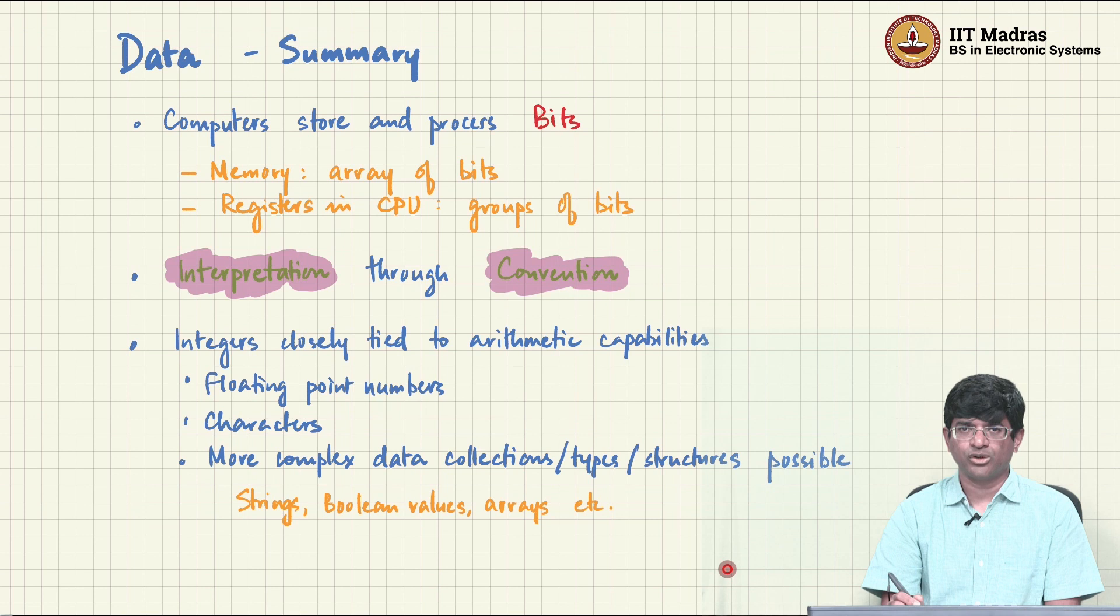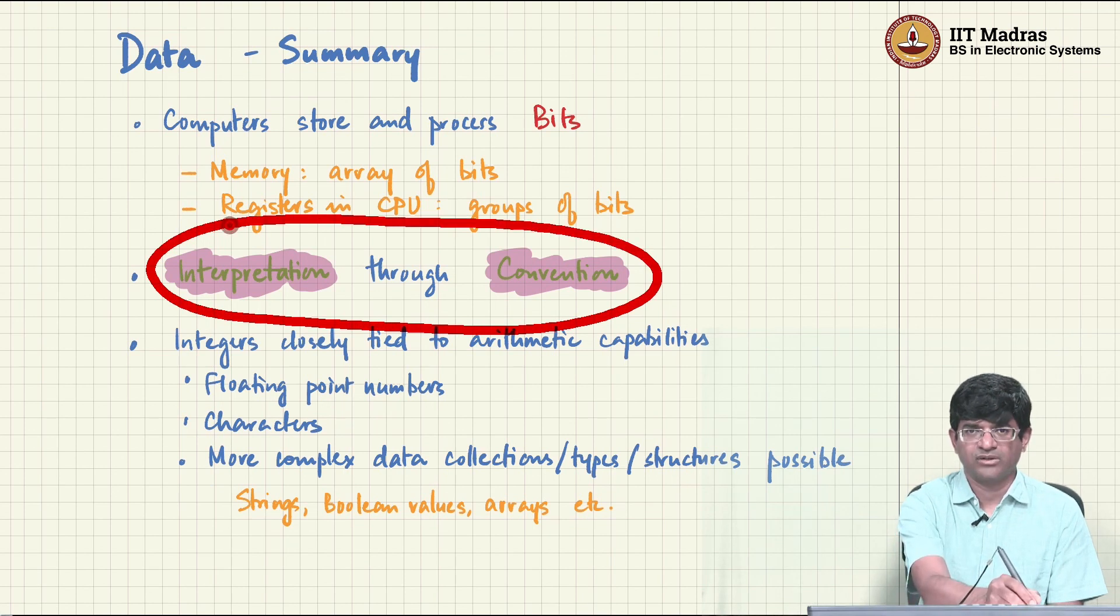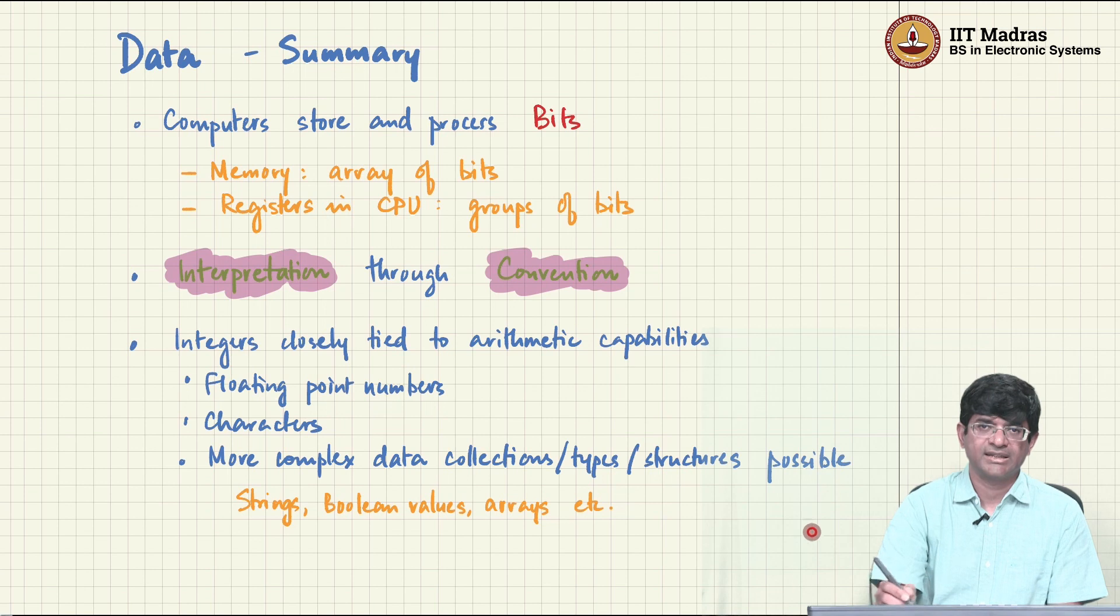But then what we saw was there were other things that we might want to represent inside a computer. In particular there are floating point numbers that we will be using as floats and doubles inside a program. There are characters which essentially represent all the text or any interaction that we have with the computer. And later on as we will see, there will be more complex data collections, data types, data structures that can be implemented. And at the end of the day, the main thing that we need to keep in mind boils down to this phrase: interpretation through convention. Pretty much all of programming is about how to organize your data and how to apply the right conventions, so that someone else reading the program or the computer interprets it properly and does the work that is expected from it.